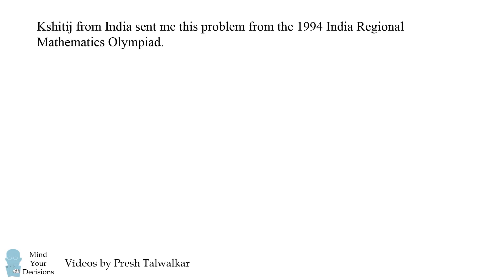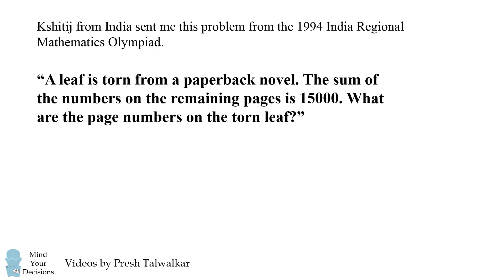Hey, this is Presh Talwalkar. Kshithitch from India sent me this problem from the 1994 India Regional Mathematics Olympiad. A leaf is torn from a paperback novel. The sum of the numbers on the remaining pages is 15,000. What are the page numbers on the torn leaf?